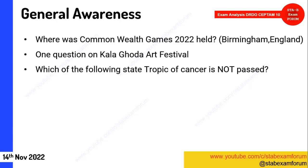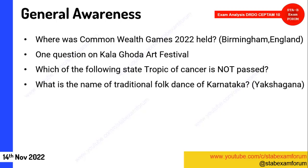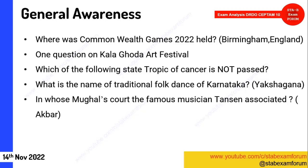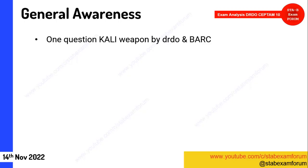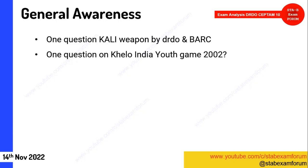One question on the Kalagoda festival — we don't have full information on that. Which states does the Tropic of Cancer not pass through — from geography. Traditional folk dance of Karnataka: Yakshagana was the correct answer. In the Mughal court, which famous musician is associated with Akbar? One question related to the SMILE scheme — launched by the Telangana government. One question on the KALI weapon developed by DRDO. Khelo India Youth Games also came. Overall, students were very lucky — General Awareness was quite easy.